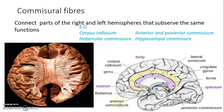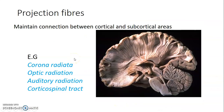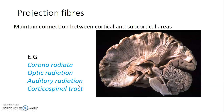Thirdly, we have projection fibers, which maintain connections between cortical and subcortical areas. These include the corona radiata, optic radiation, auditory radiation, and tracts such as the corticospinal tract. The optic radiation connects the primary visual center to the lateral geniculate body. The auditory radiation connects the medial geniculate body of the thalamus to the primary auditory center, located at the transverse gyri on the superior temporal gyrus.